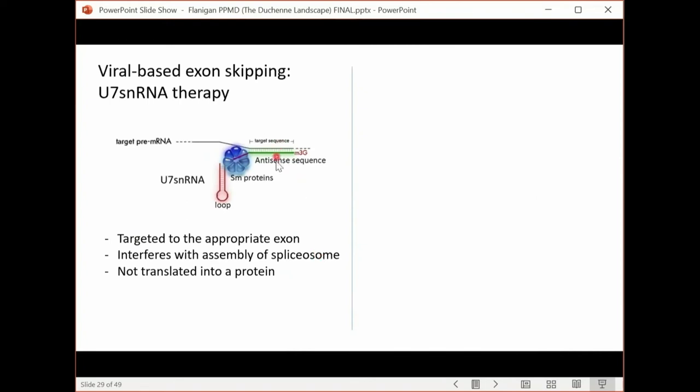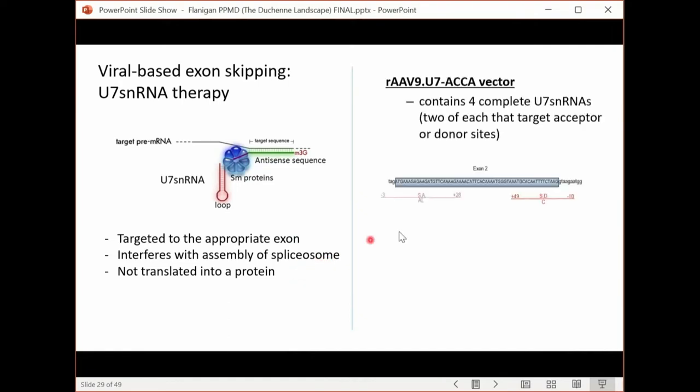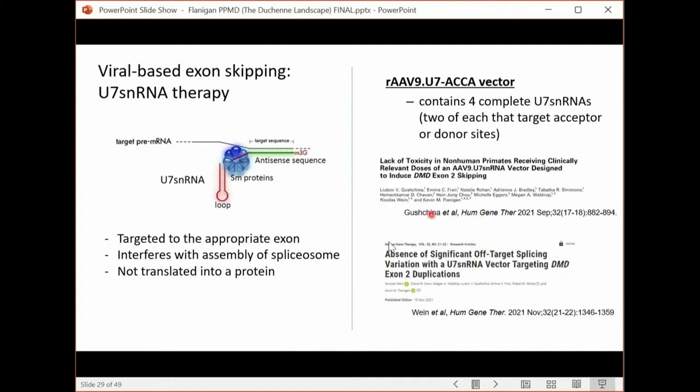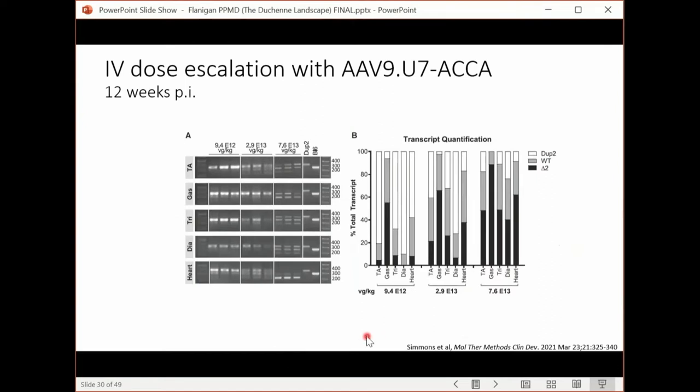What we can do is swap out the HDE binding site with an antisense that's directed at an exon of interest, whatever exon we want. So we targeted the exon appropriately. Now it interferes with the assembly of the spliceosome, but it's not translated into a protein. So we put it into a vector with four complete copies, two in which we target the splice acceptor, and two in which we target the splice donor site. In fact, we showed and have published in peer-reviewed data, all of the data that support the safety of this. We looked in non-human primates, and we saw no toxicity associated with it.